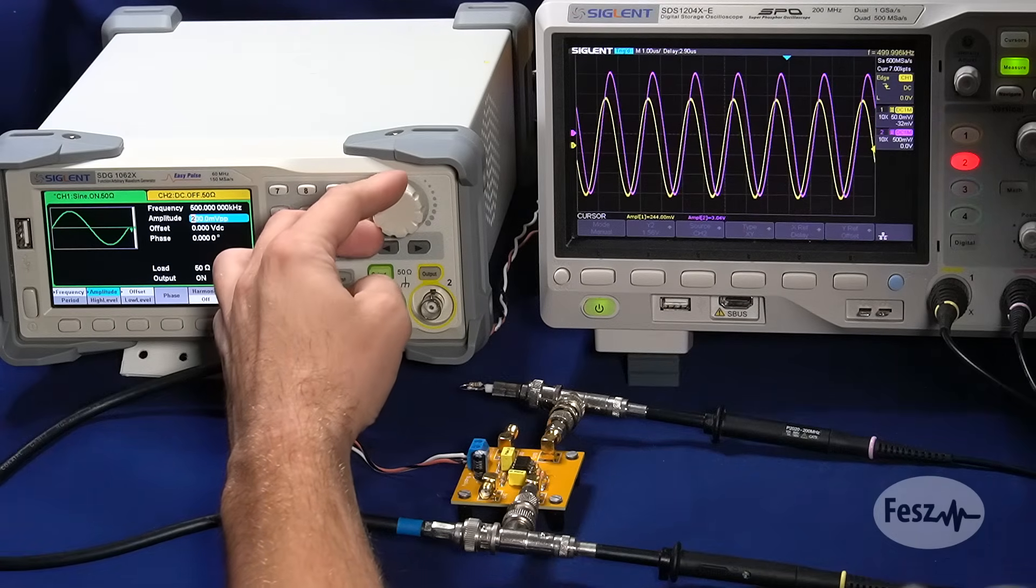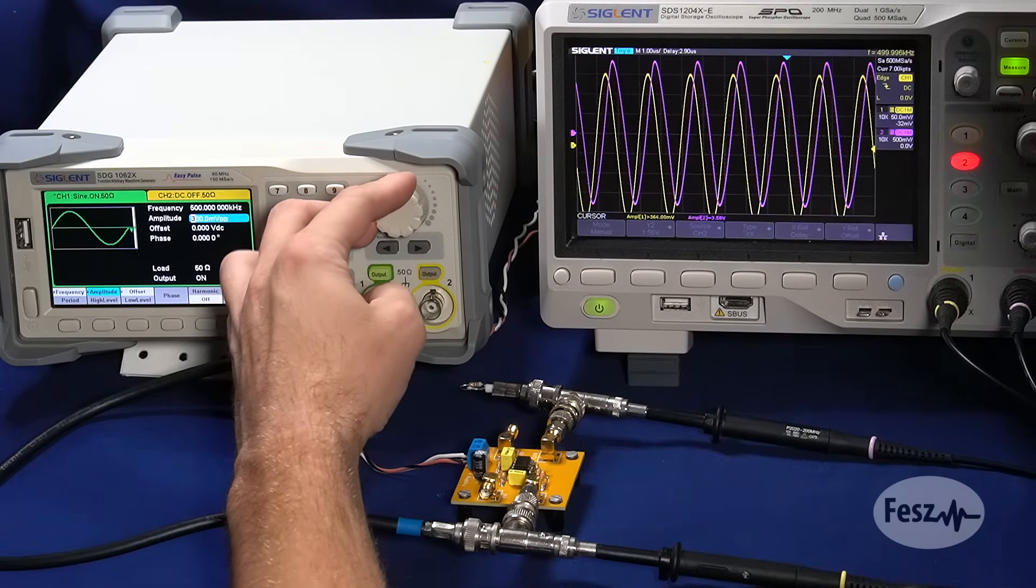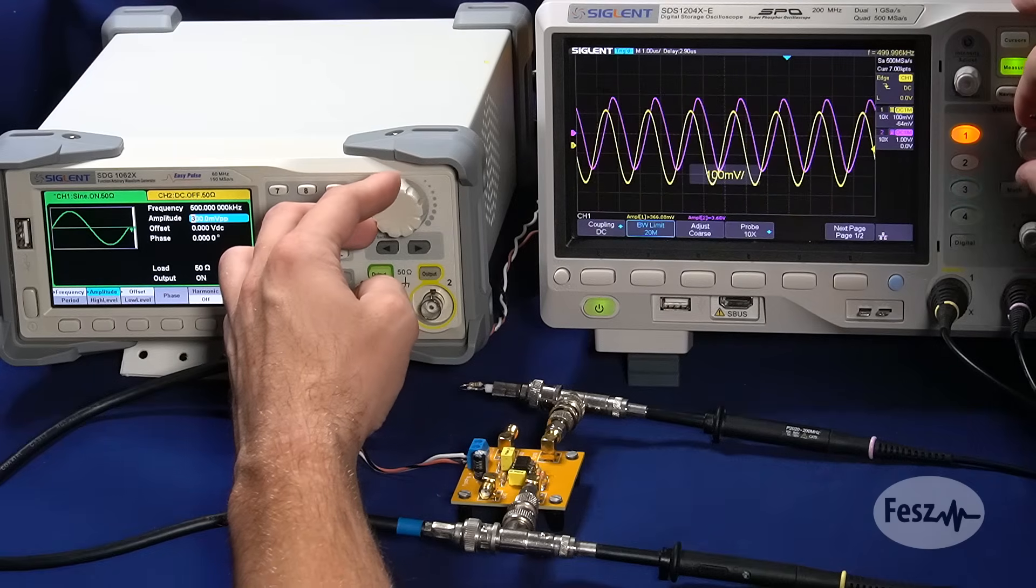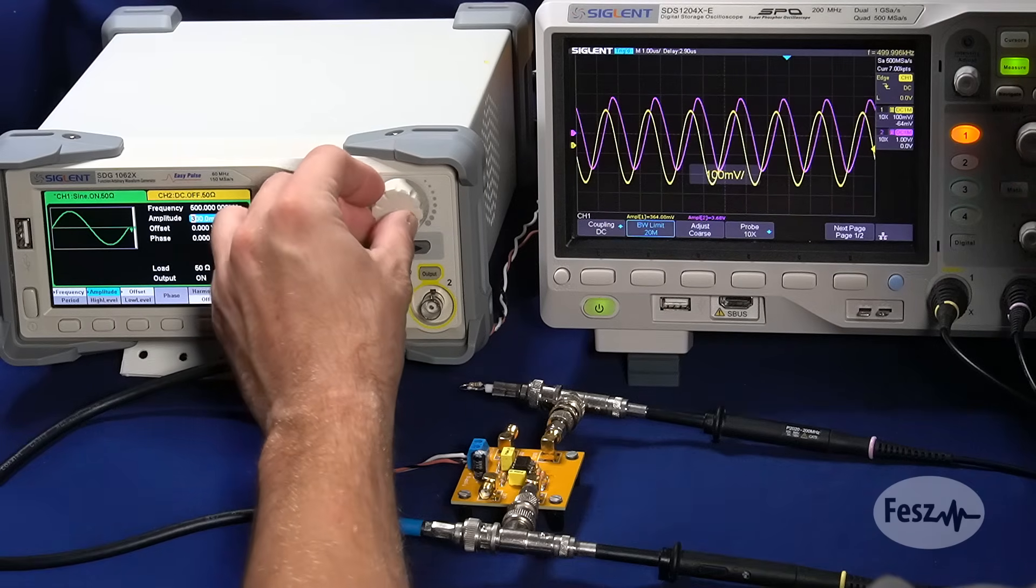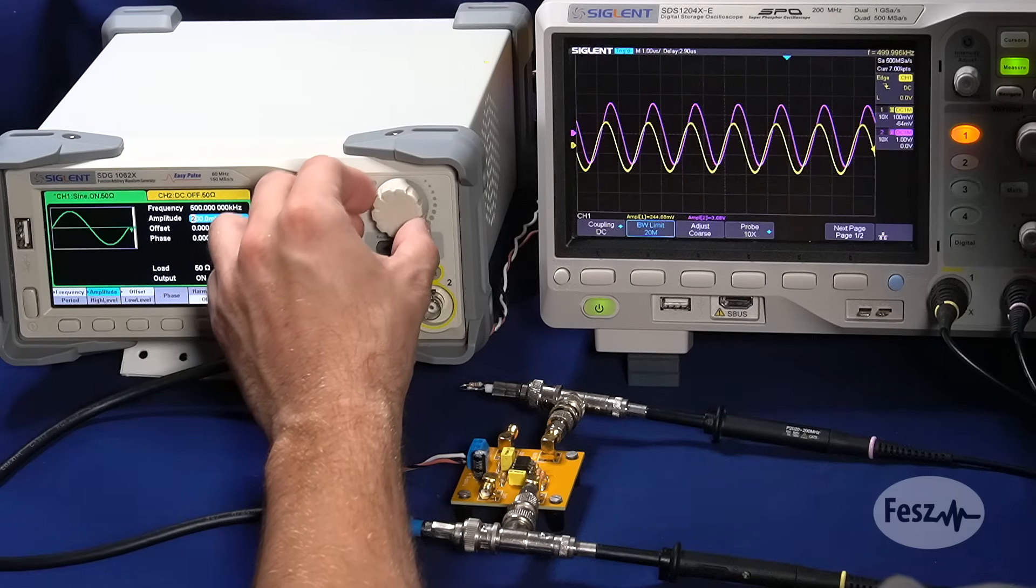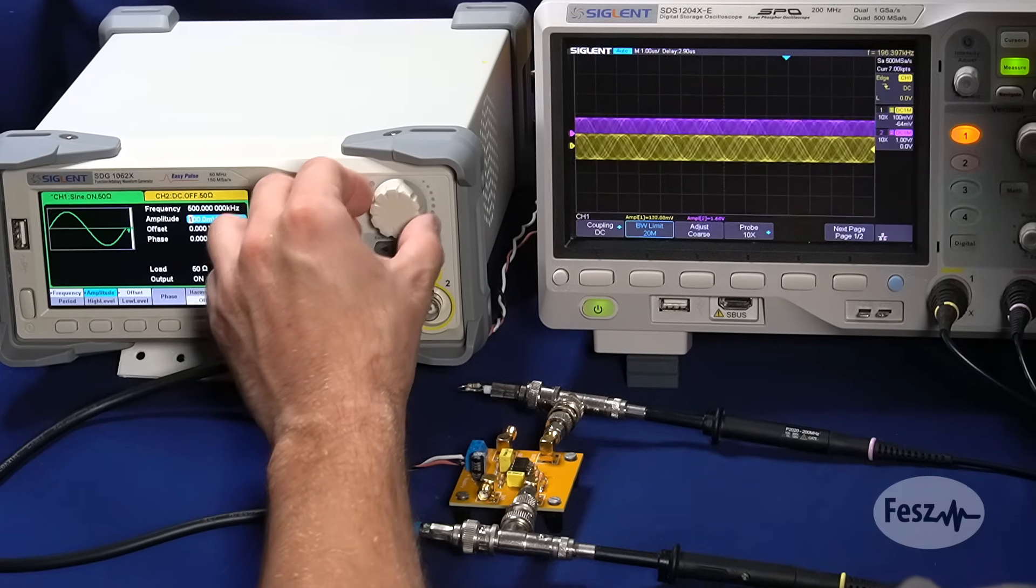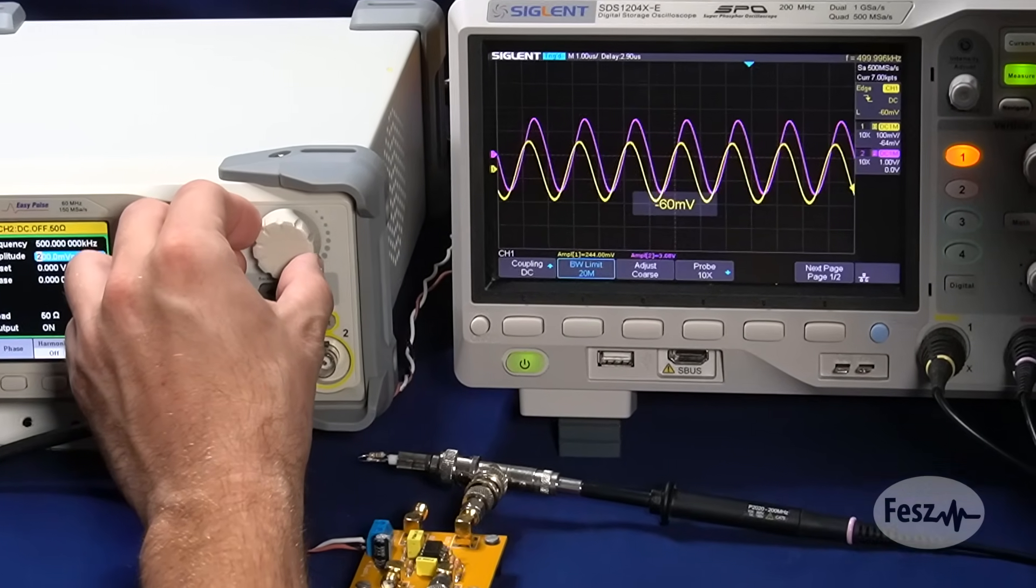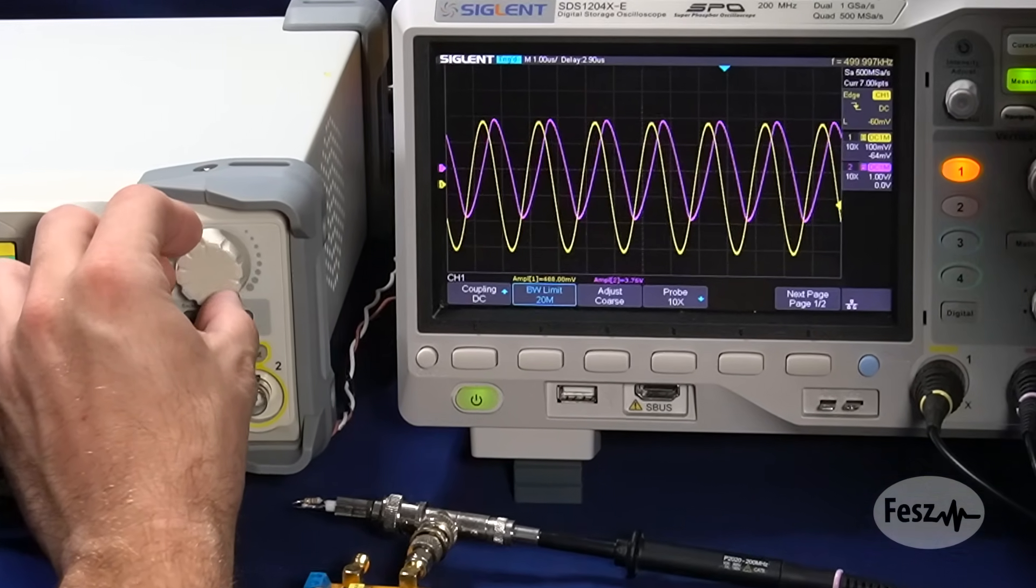So, playing around with the signal generator, we can observe this phenomenon in practice. When the output is relatively small, it's a clean sine wave, and the input to output ratio is 11, as we've set with the gain resistors. But as the input signal increases, first visible thing will be a degradation in the gain ratio, but then the waveform will also get visibly distorted.